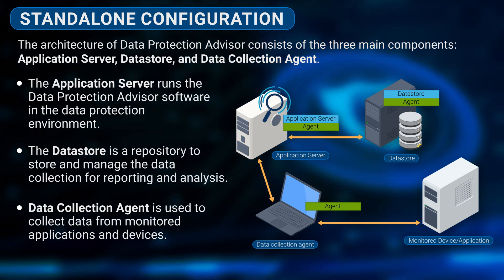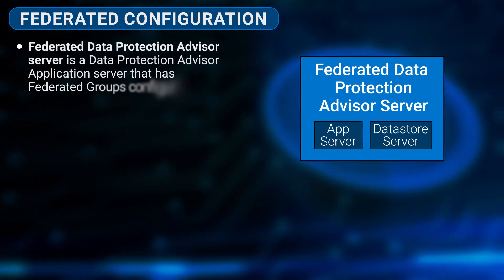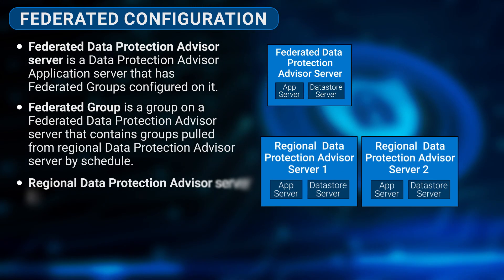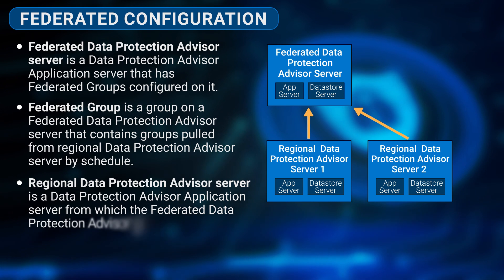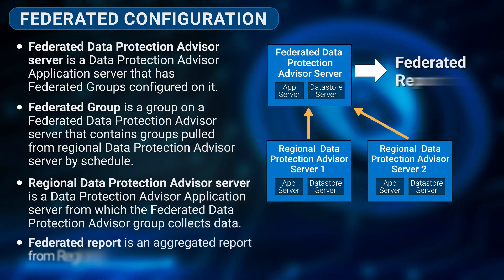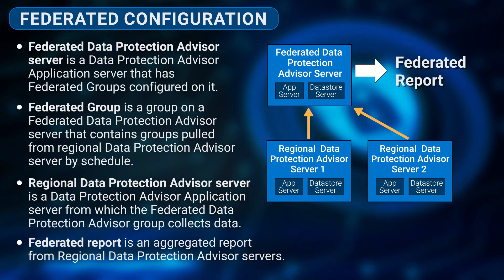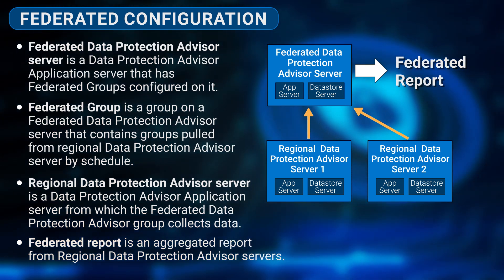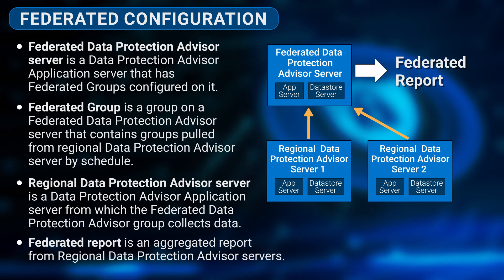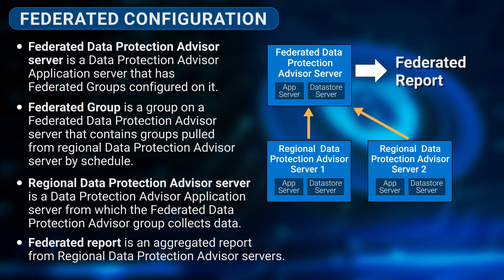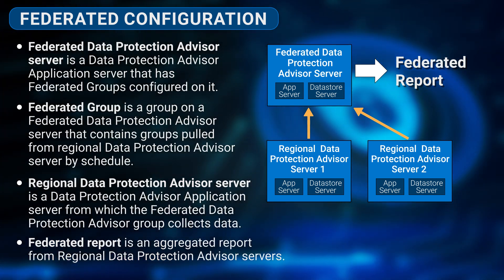The next configuration type is federated reporting, designed for summary-level reporting. Federated reporting provides aggregated reporting across multiple DPA servers — a useful feature if you have a large environment with many DPA servers in different geographies or customer groups. Rather than running the same report separately across each DPA server and merging the results, federated reporting merges all DPA servers into one super-tree structure on a server designated as the federated DPA server, from which you can run federated reports.